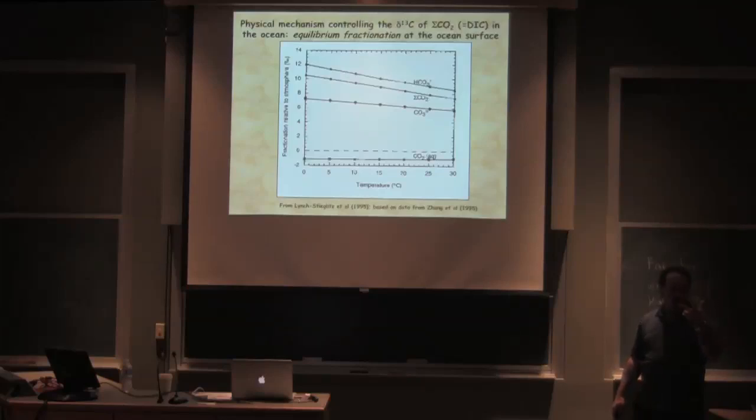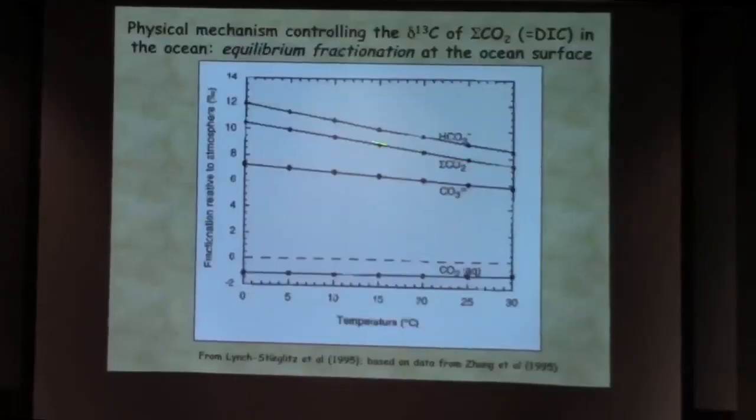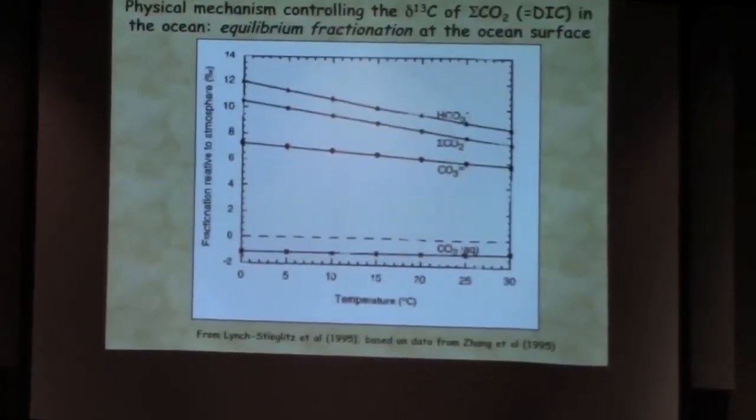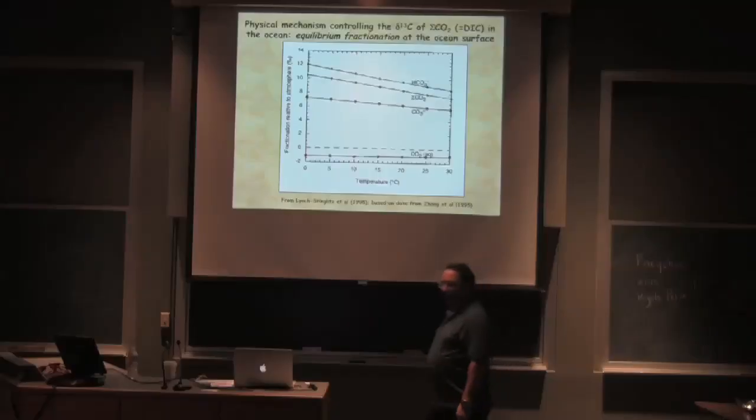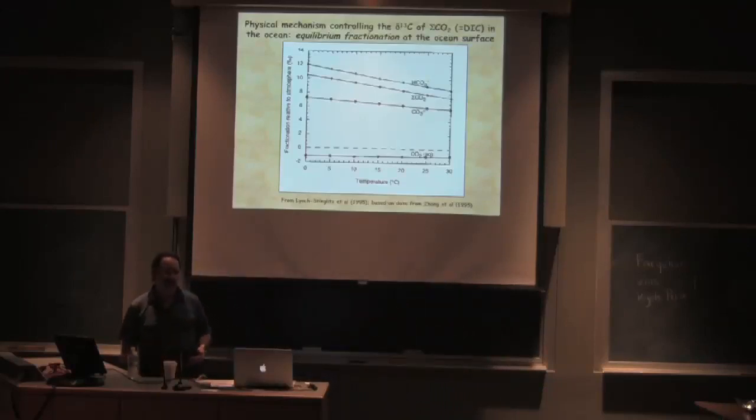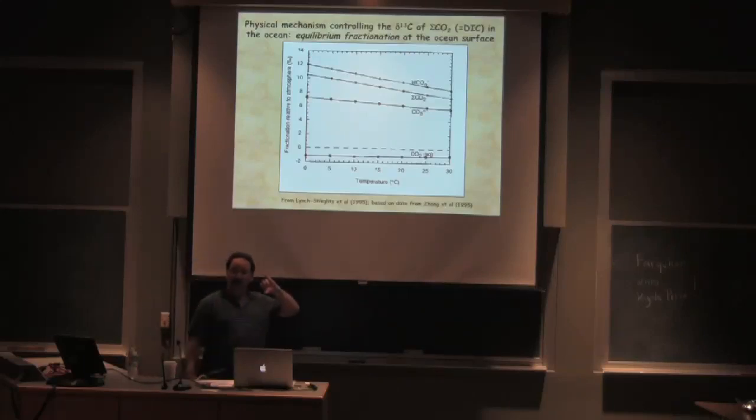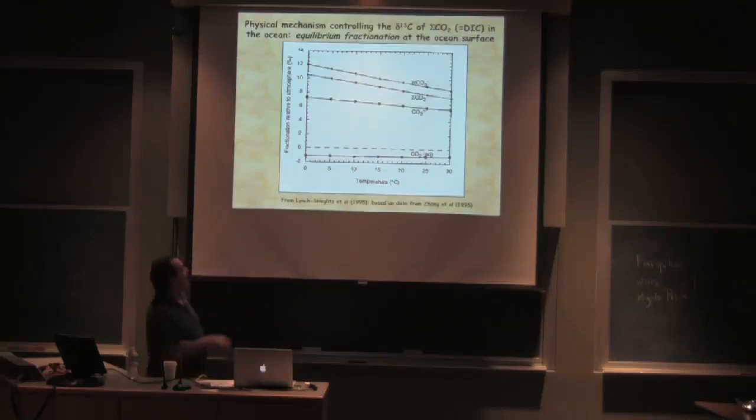You find that total CO2—which is carbonic acid, bicarbonate, and carbonate combined, total inorganic carbon—effectively what we see is a temperature-dependent fractionation such that when it gets colder, you have a greater fractionation between the CO2 and the inorganic carbon that's in seawater.